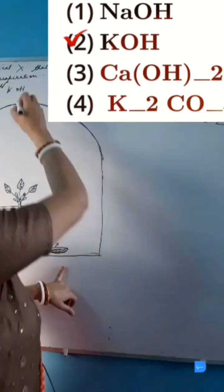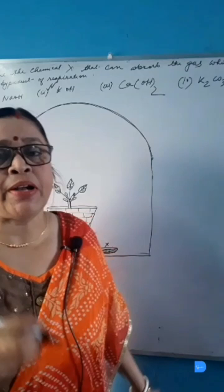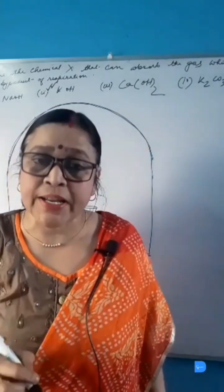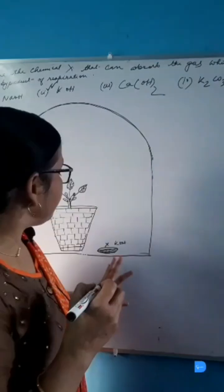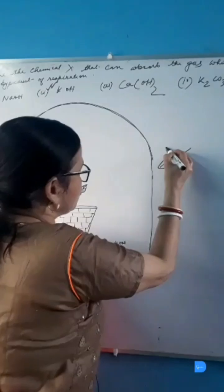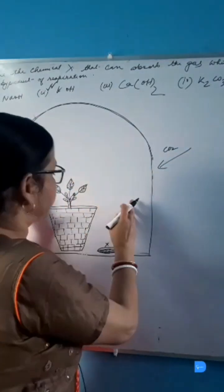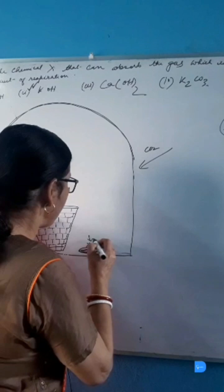Caustic soda or potassium hydroxide absorbs carbon dioxide. This experiment is to demonstrate that carbon dioxide is necessary for photosynthesis. If we keep potassium hydroxide inside the bell jar and seal the bell jar from all sides so that no carbon dioxide can enter from outside, the carbon dioxide which is present inside is absorbed by potassium hydroxide.